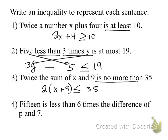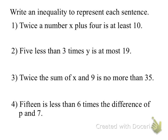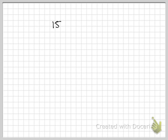'15 is less than 6 times the difference of P and 7.' Someone I haven't heard from? 15 is less than 6 times the difference of P minus 7. So 6 parentheses (P minus 7).